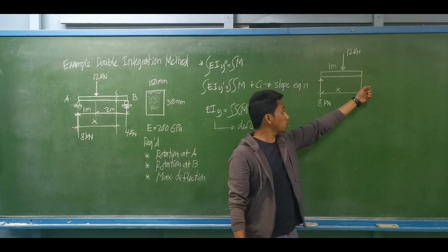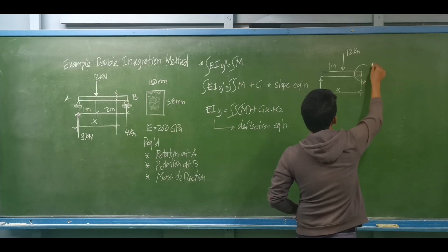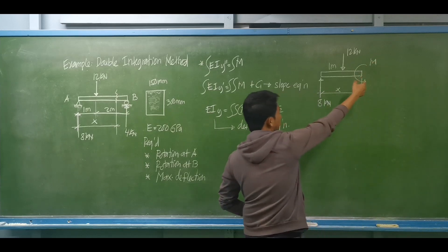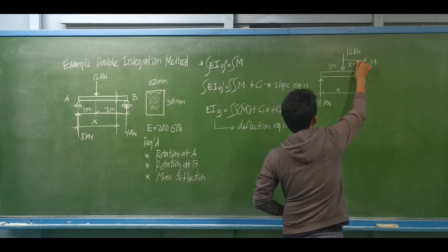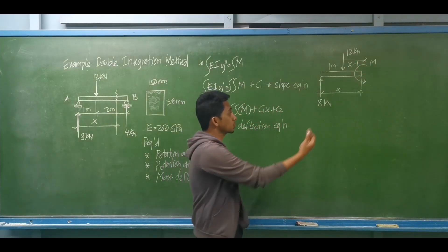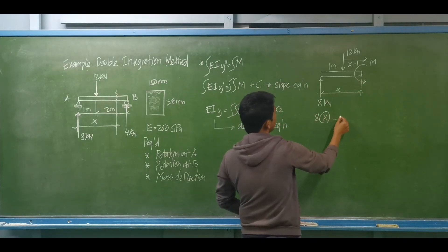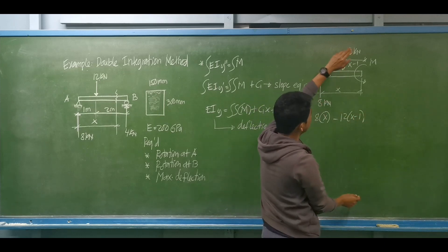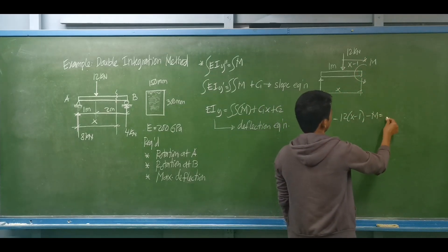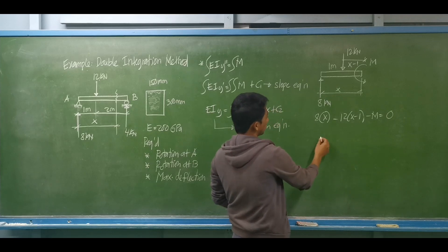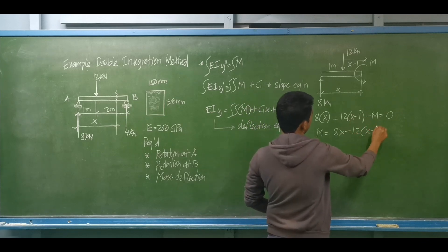This is our cut and exposed section. We have a moment which is assumed to be counterclockwise. Taking summation of moments about the cut section: the remaining distance is x minus 1. So summation of moments about the cut section gives A times x minus 12 times (x minus 1), minus that moment equal to 0.